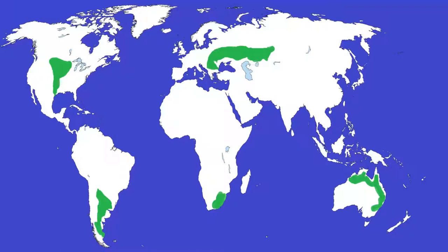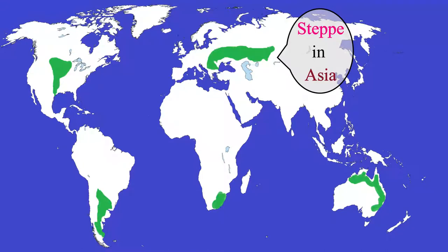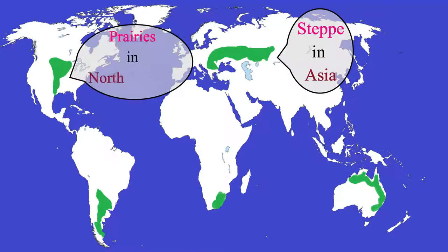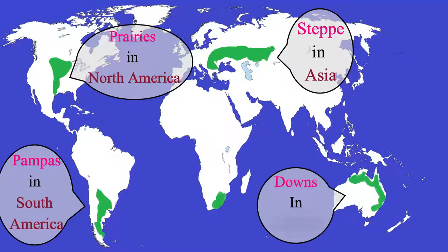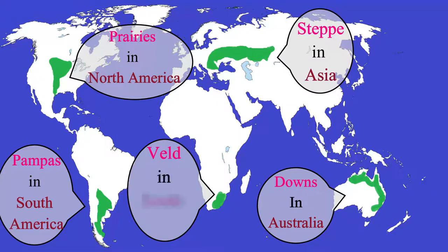The temperate grassland is known as the steppe in Asia, the prairies in North America, the pampas in South America, downs in Australia, and veld in South Africa.